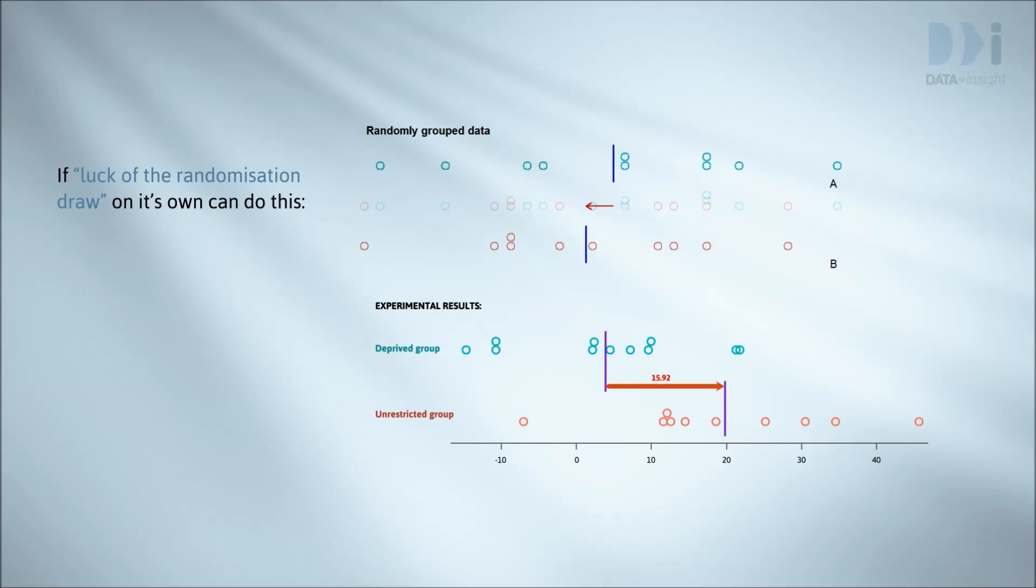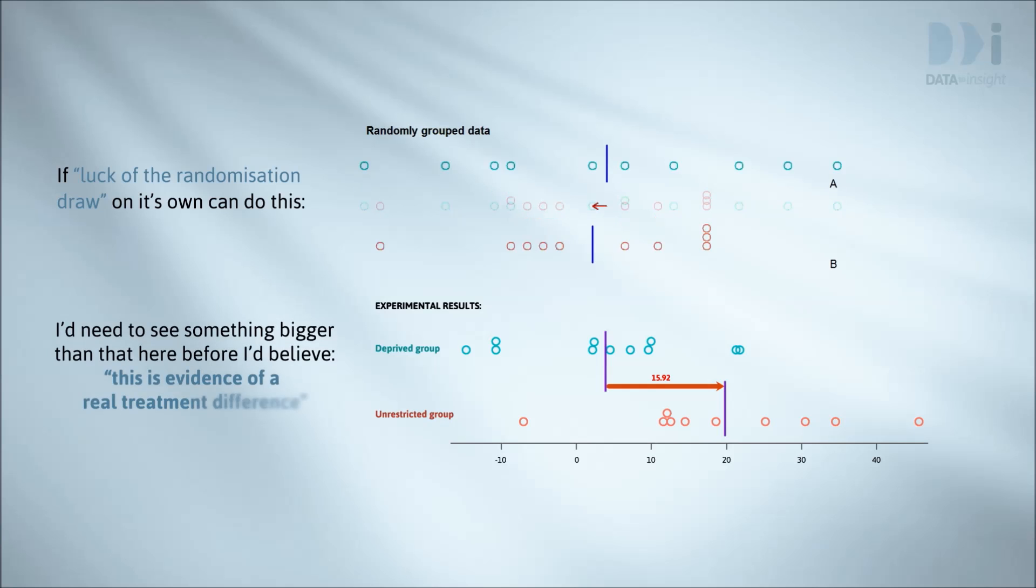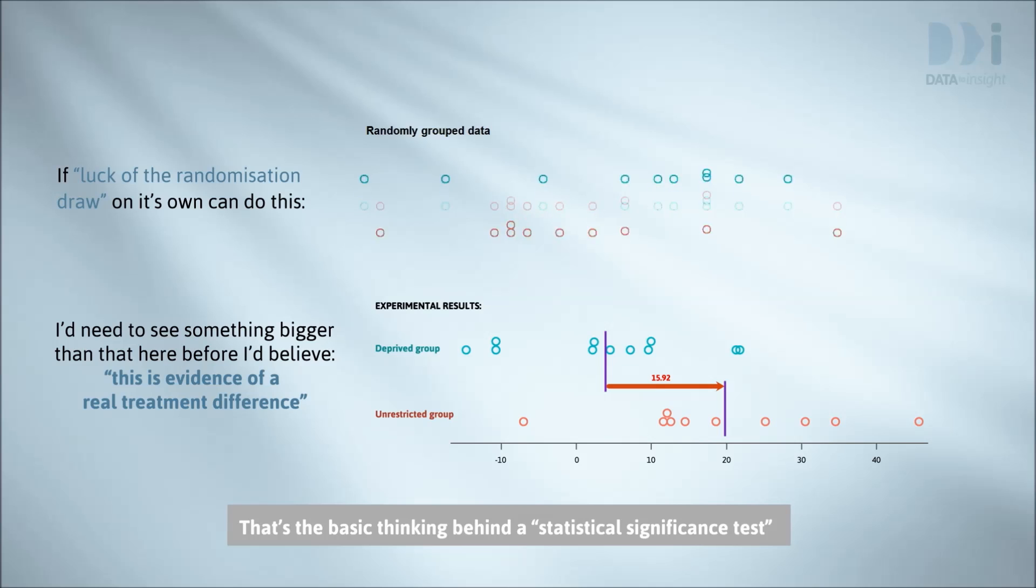If randomization luck on its own can do this, we're going to need to see something bigger in our experimental data before we believe that the experimental data provides evidence of a treatment effect, here that sleep deprivation causes reductions in test scores. Sound like common sense? That's the basic thinking behind a statistical significance test, or statistical hypothesis test.